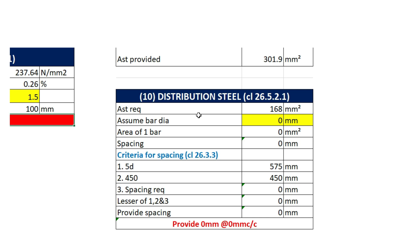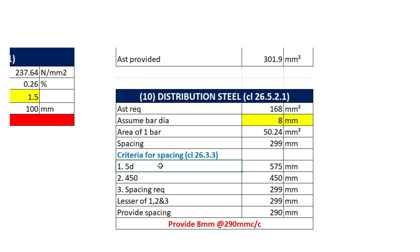Moving to the last step, in which we need to calculate the distribution steel. We only need to assume the diameter of the distribution bars and the rest of the values will automatically be calculated. Let's provide 8 mm diameter bars; the area of one bar will be 50.24 mm square and the spacing required will be 299 mm. The spacing criteria for distribution bars from clause 26.3.3 requires the lesser of 5D (effective depth), 450 mm, or the spacing required. The lesser one is 299 mm, so let's provide 290 mm spacing. Hence for distribution bars, we provide 8 mm diameter bars at 290 mm center to center.